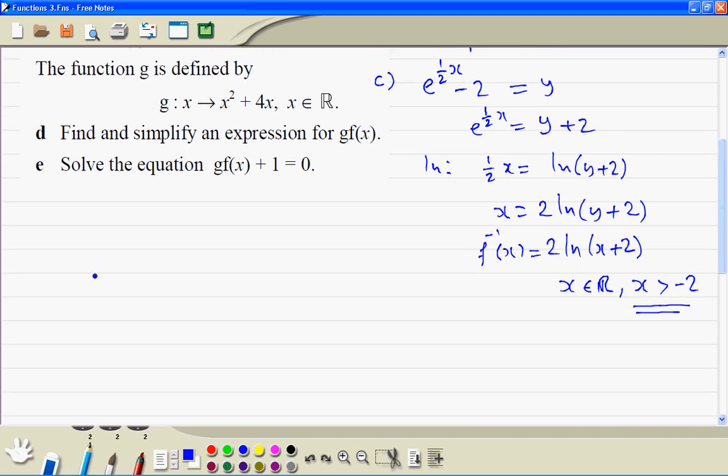Part d. So we want to find g(f(x)). Wherever there's an x, this will be replaced with the f function. So e to the power of half x minus 2, all squared, plus 4 times e to the power of half x minus 2.